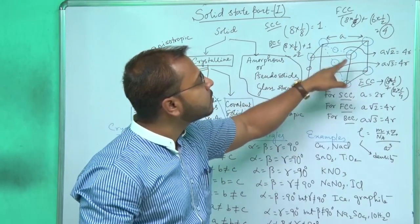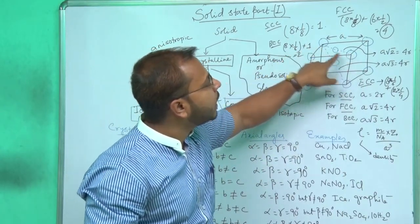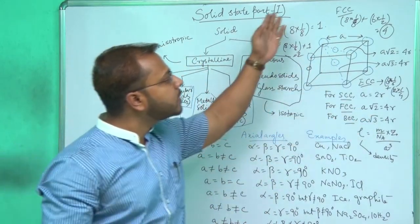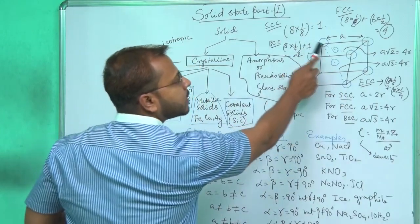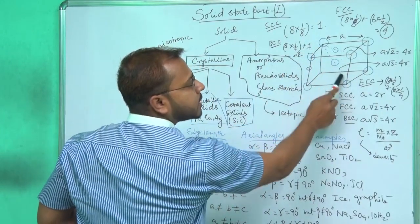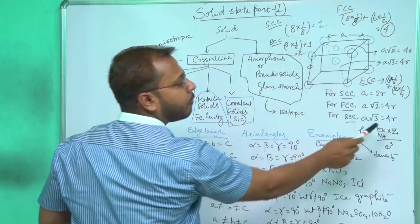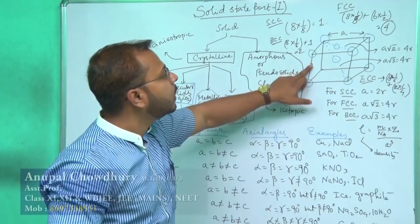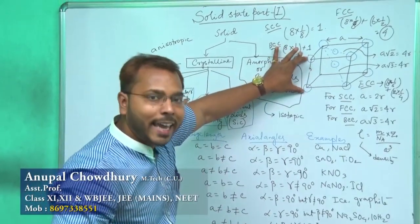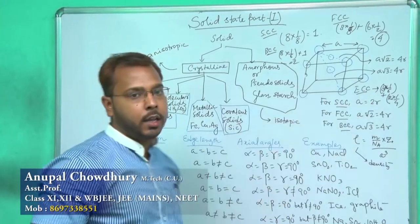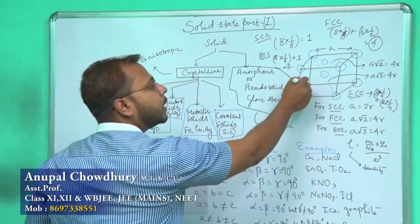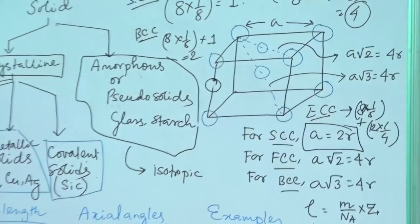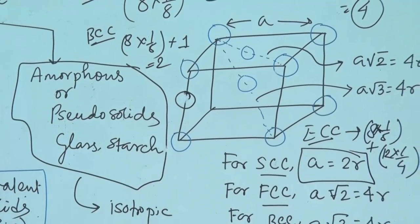For the radius-to-edge-length relationships: in FCC, 4r = a√2. In BCC, 4r = a√3. In simple cubic (SCC), a = 2r. In edge-centered cubic, a = 2r for SCC and a = 4r for ECC.